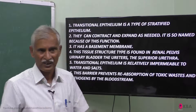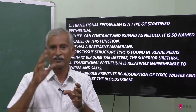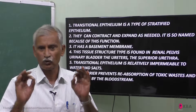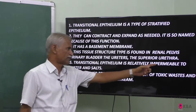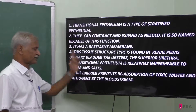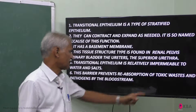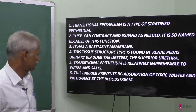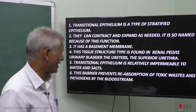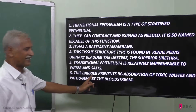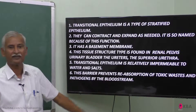So excretion through this epithelium is not possible. This is why we can see this type of cells — it is relatively impermeable to water and salt. This is a barrier that prevents reabsorption of toxic waste and pathogens by the bloodstream.